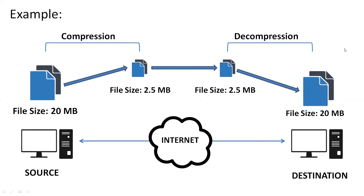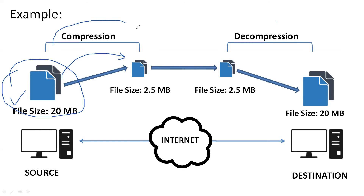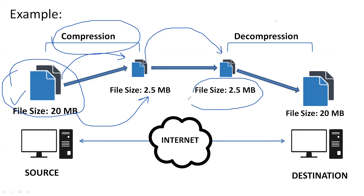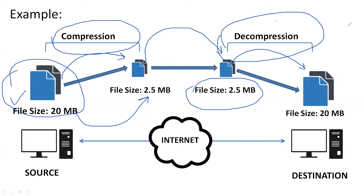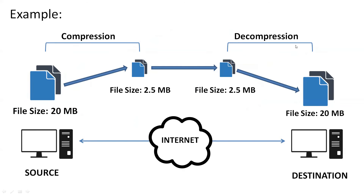Here is an example of data compression and decompression. On the sender side, there is a file of 20 MB to be forwarded through the network. When it is forwarded to the internet, data compression is done: the 20 MB file is converted into 2.5 MB. When received at the other end, decompression is done by the presentation layer. This task is called compression and decompression.